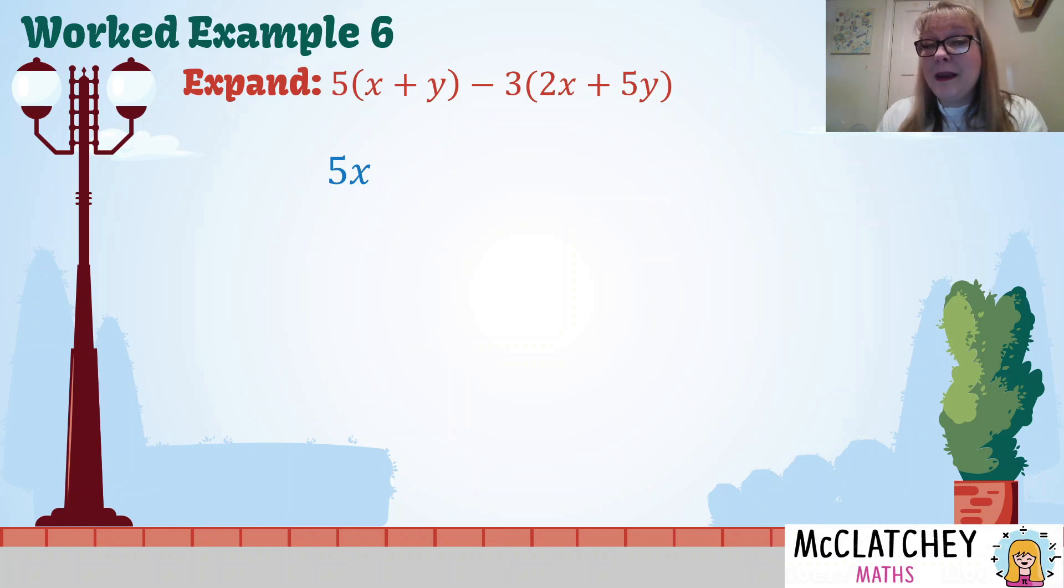Now I've got negative 3, so you can basically cover over that first set of brackets and then focus on the second set of brackets. Minus 3 times 2x makes minus 6x. Minus 3 times positive 5y makes negative 15y.